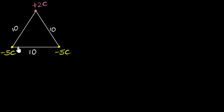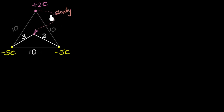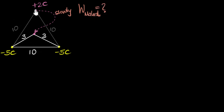We have three charges kept like this — these are fixed charges. Now imagine I take this plus two Coulomb charge and slowly move it along this path and bring it to this point, so that now it is at a distance of three meters. The question we want to answer in this video is: in moving this charge, how much work did the external agent — Mahesh — do in moving the charge from here to here? And we also want to calculate how much work did the electric field do when the charge went from here to here.